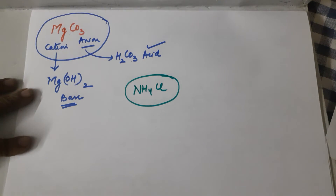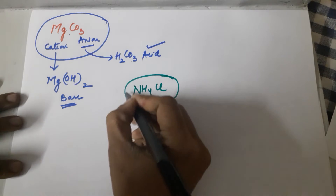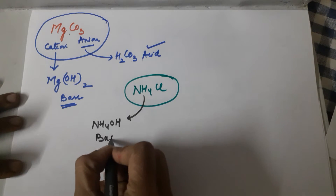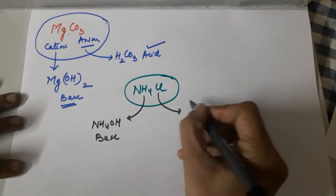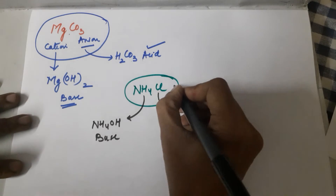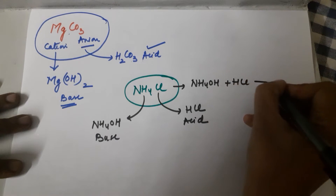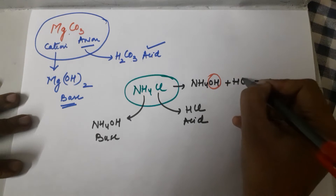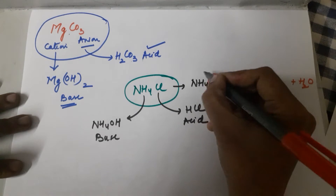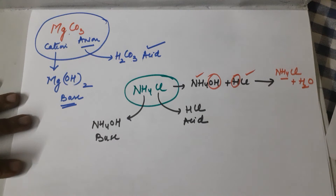Another example: ammonium chloride, NH₄Cl. To find the base, add OH⁻ to the cation NH₄⁺ — you get ammonium hydroxide, NH₄OH. The acid is HCl. Ammonium hydroxide reacts with HCl: the base loses OH⁻, the acid loses H⁺, giving water as a byproduct, and the salt formed is ammonium chloride.